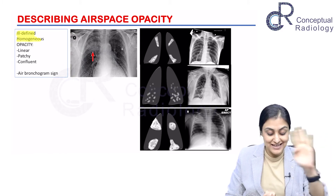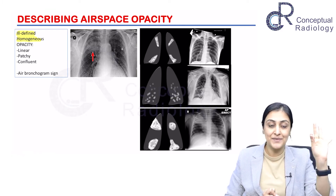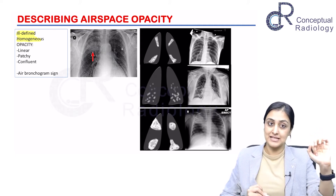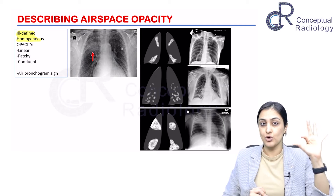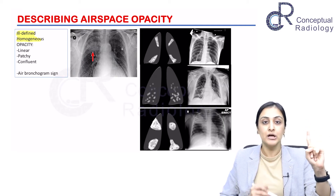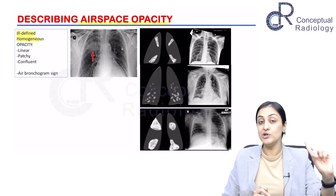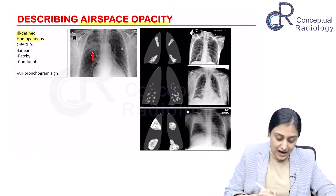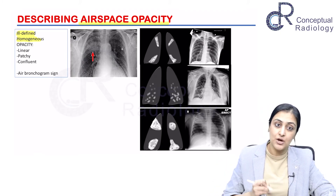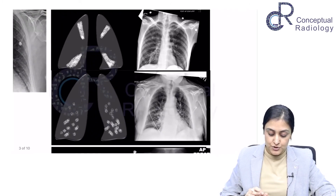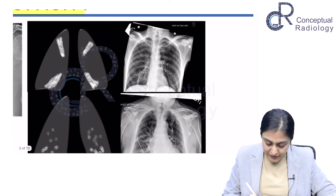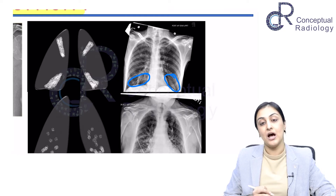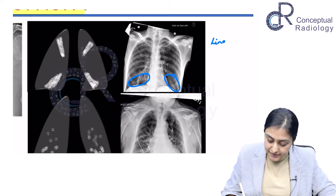It is ill-defined, meaning it is not a nodule or a mass, and it is homogeneous. These are our initial descriptive words. You then have three further sub-classifications of the opacity. What you say is: an ill-defined homogeneous opacity which is either linear, patchy, or confluent. Looking at this x-ray, you can see opacities which are ill-defined and homogeneous but these are linear opacities.